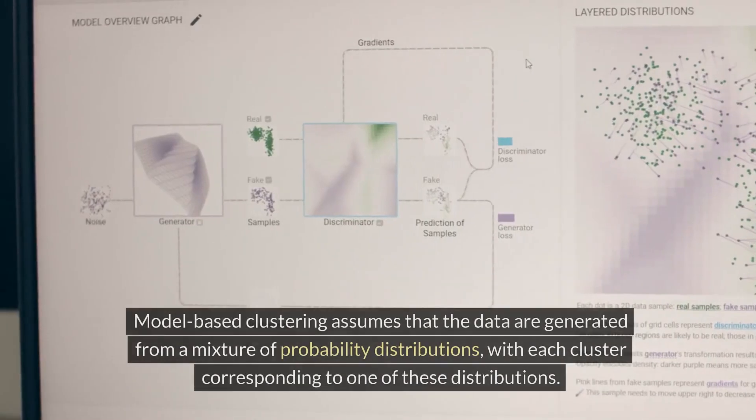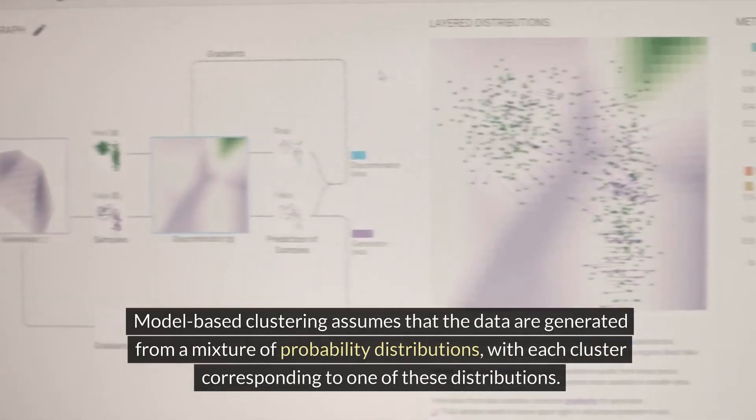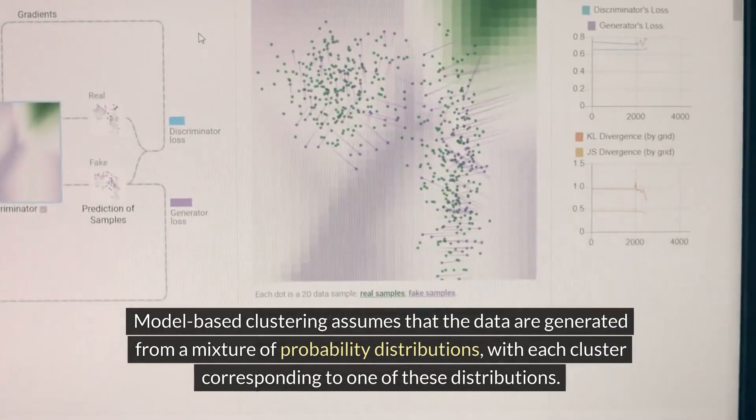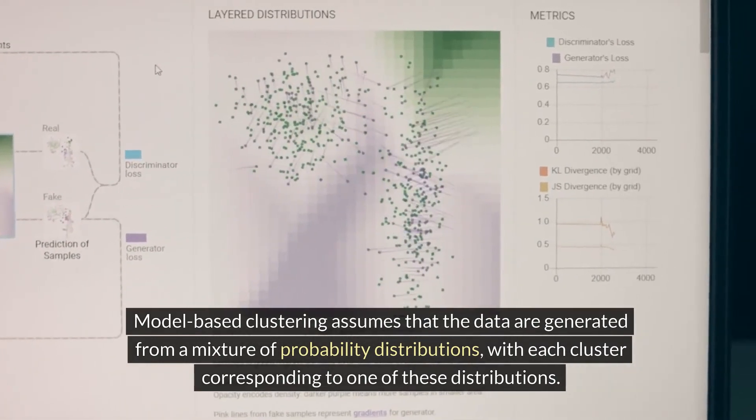Principles. Model-based clustering assumes that the data are generated from a mixture of probability distributions, with each cluster corresponding to one of these distributions.